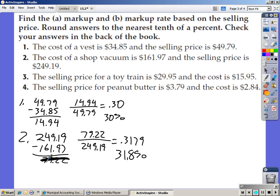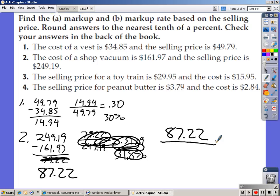So $249.19 minus $161.97 is $87.22. All right. So $87.22 divided by $249.19 works out to be, this is a much nicer answer, 0.35 or 35%.